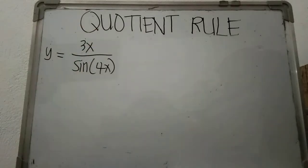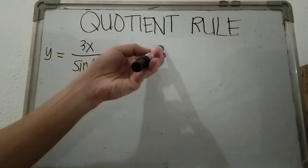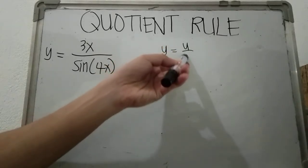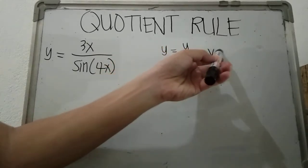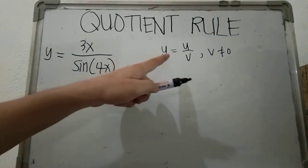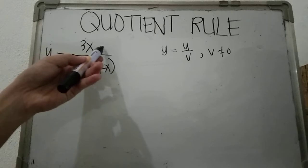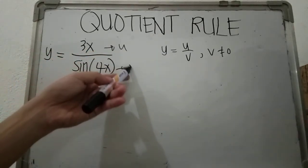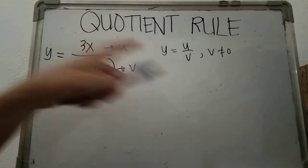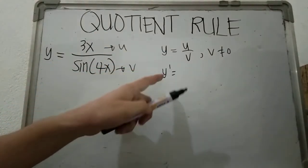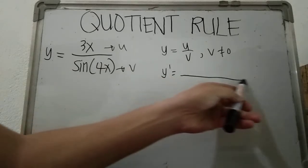The quotient rule is defined by the expression y = u over v, where our denominator v should not be equal to zero, otherwise it will become undefined. Our u corresponds to the numerator 3x, and our v corresponds to the denominator sine 4x. The derivative of u over v is denoted as y prime, or dy over dx.